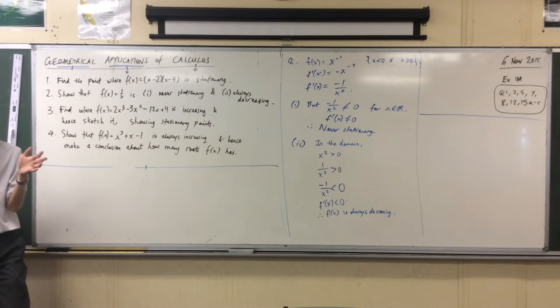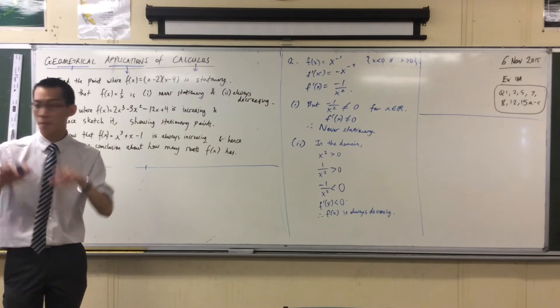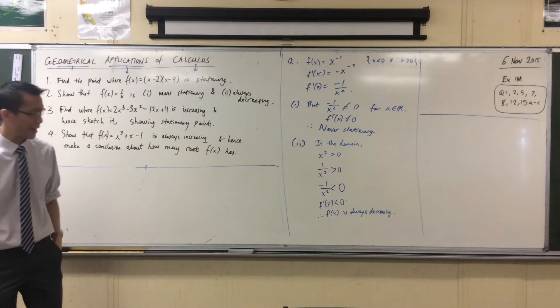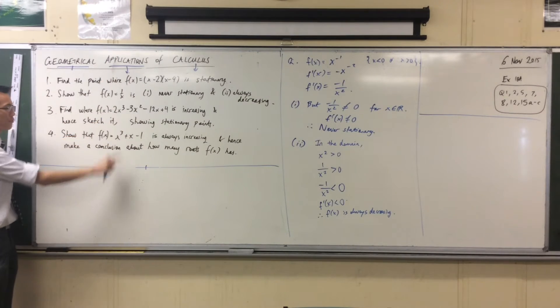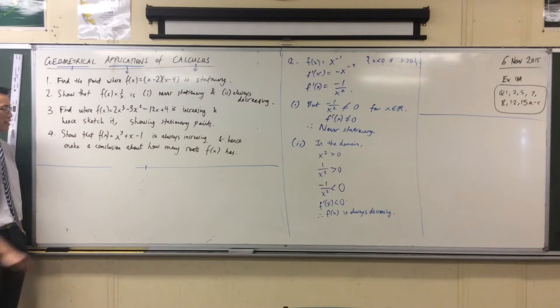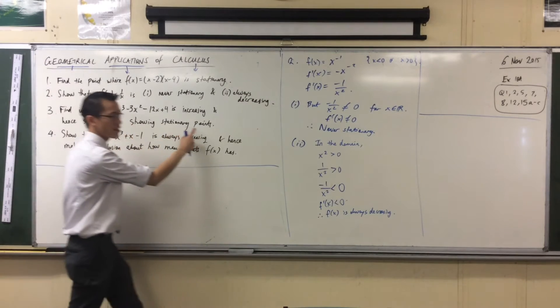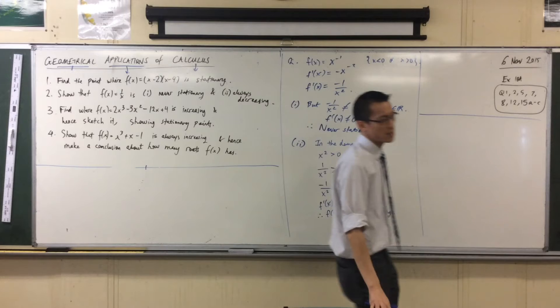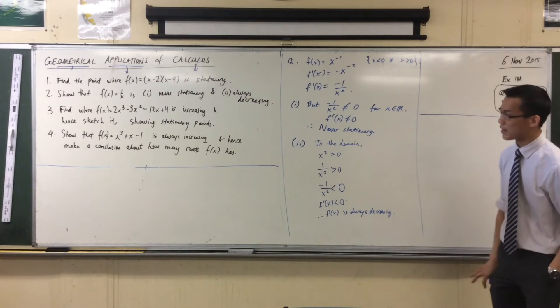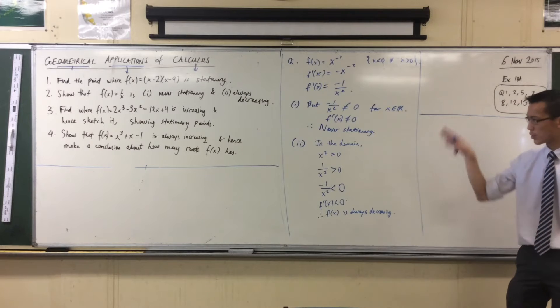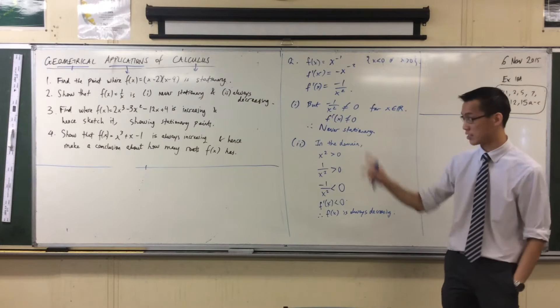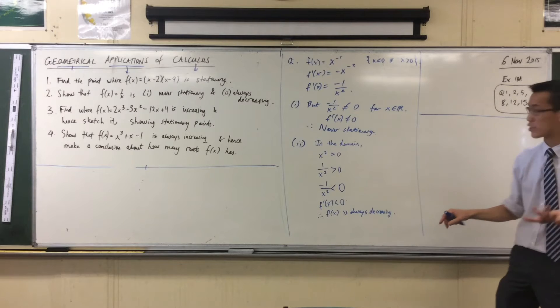You can see, even for such a small set of ideas, that table we just drew, it's not that complicated, but there's so many different ways you can turn it. Here's a new function, find where it's increasing, sketch it showing stationary points. You'll notice it's not asking for intercepts, even though you would usually assume there are intercepts. I wonder if you can work out as we go through this why they're not going to ask for intercepts for a lot of these examples.